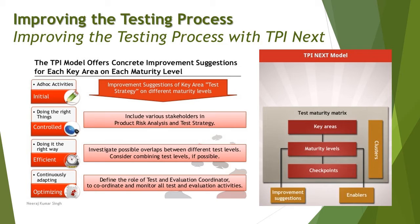At the Controlled level you have an established process, but there are still many areas that need improvement. When you move into the Efficient level – 'doing it the right way' – further improvisation happens. Investigation of possible overlaps between different test levels takes place, and combining test levels where possible is considered. For example, not every unit test needs to complete before integration testing begins; some tested units can be pushed to integration testing, shrinking your timeline.